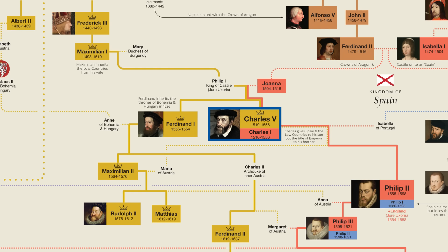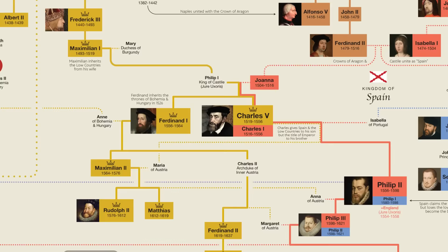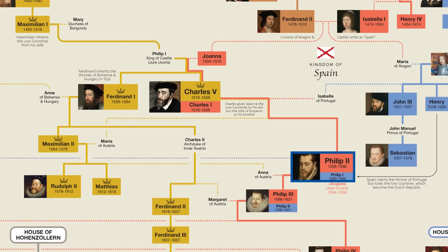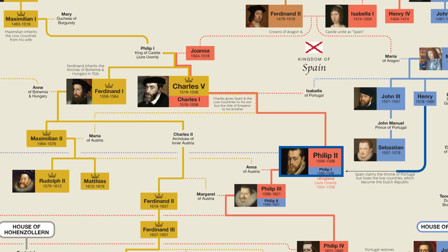Along with all this European territory, Charles also controlled Spanish possessions in the Americas. Charles V abdicated in 1556, leaving the throne of Spain to his son Philip II, and the Holy Roman Empire to his brother Ferdinand I. Philip's mother Isabella was a Portuguese princess, so Philip ended up inheriting Portugal as well, putting Spain and Portugal into the so-called Iberian Union, which lasted for three generations.